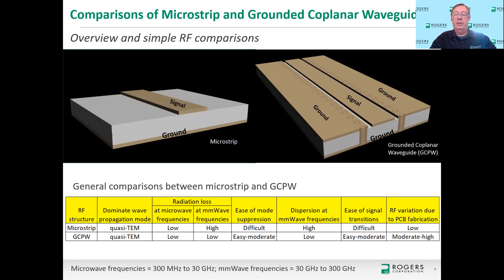Dispersion is usually an issue at higher frequencies that are very wide band. At millimeter wave frequencies, MicroStrip is a dispersive medium — that's just the nature of the beast. If the Grounded Coplanar Waveguide is designed correctly, you can have very little dispersion or maybe no dispersion at these millimeter wave frequencies.